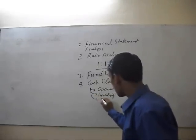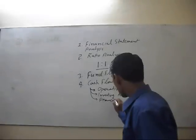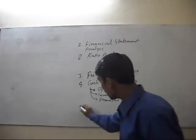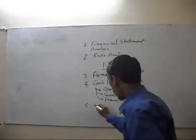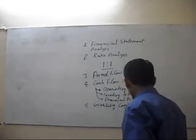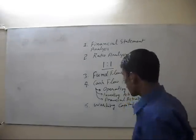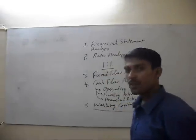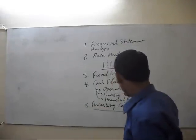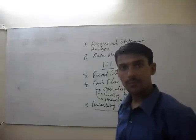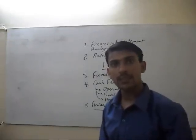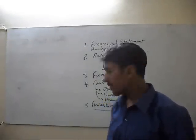And in financing activities. The fifth tool of management accounting is working capital analysis. In working capital analysis, we compare our current assets with our current liabilities and check the amount of excess. We also analyze our inventory, sundry debtors, sundry creditors, and cash and bank balance.